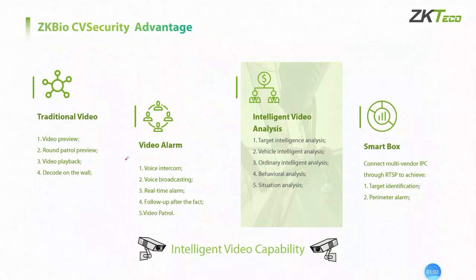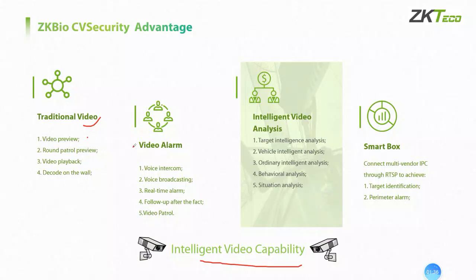Next, I will introduce some of ZKBioCVSecurity's new advantages from intelligent video capability. From intelligent video, it still retains all traditional video capabilities like video preview, video playback, and video wall, but it is more powerful. It can support 1,000-plus channels of video access, 64 channels of preview on a single screen, and 16 channels of playback on a single screen. The second capability is video alarm, including voice intercom, voice broadcasting, real-time alarm, follow-up after-the-fact analysis, and video capture.